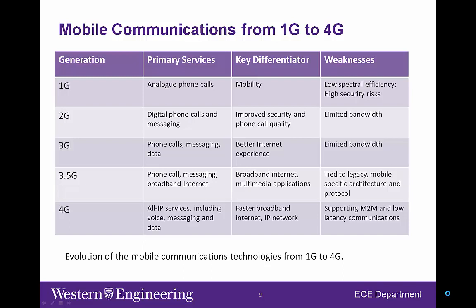Each generation of mobile communication technologies features main advantages and weaknesses. The first generation supports mobility, which is a key technology differentiator compared to wireline communications. However, it has major weaknesses including very low spectrum efficiency and higher security risk due to the use of analog communication technology. The main advantage of the second generation is digital communication technology, which led to improved security and QoS support. However, the system bandwidth is very limited.